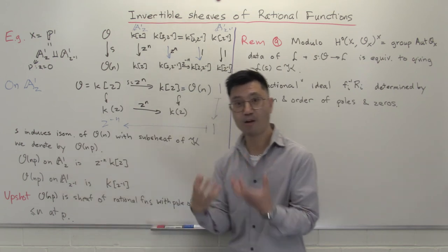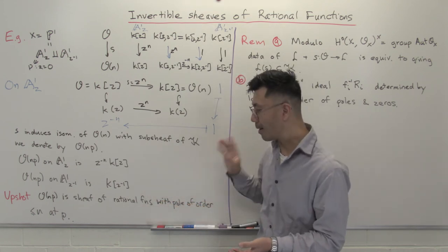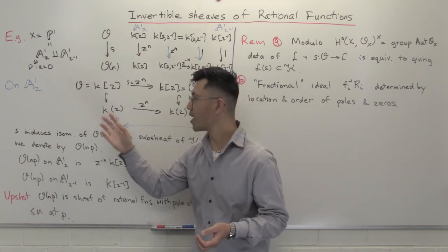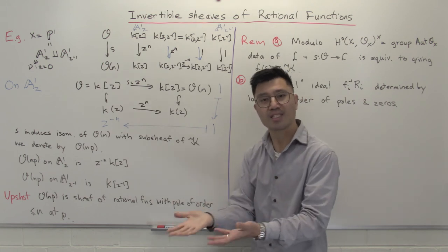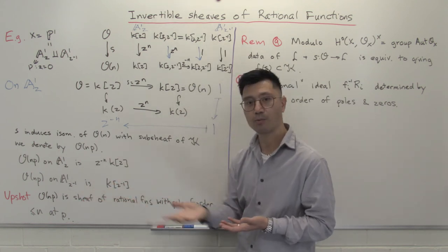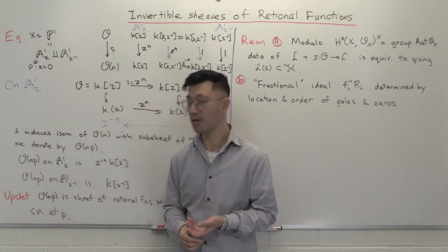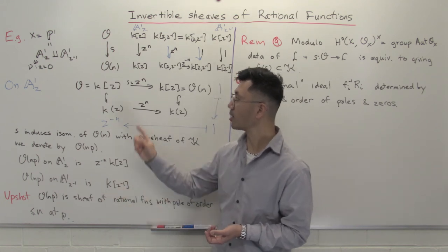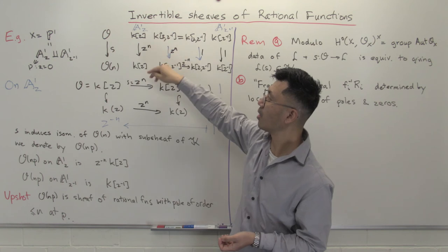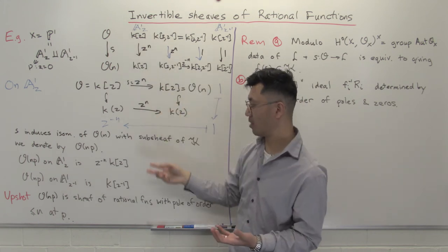So the image of O(N) inside the constant sheaf K of rational functions — which I'll denote O(N)(P), with P the point Z = 0 — is a sub-sheaf of K(Z) whose sections are rational functions regular everywhere except possibly at Z = 0 (the point P), where there's possibly a pole of order up to N. And on the A^1_{Z^{-1}} patch, since it doesn't include that point, we just get the regular functions. So this is a lovely description: O(N) is isomorphic to the sheaf of rational functions which are regular everywhere except possibly with a pole of order at most N at P.